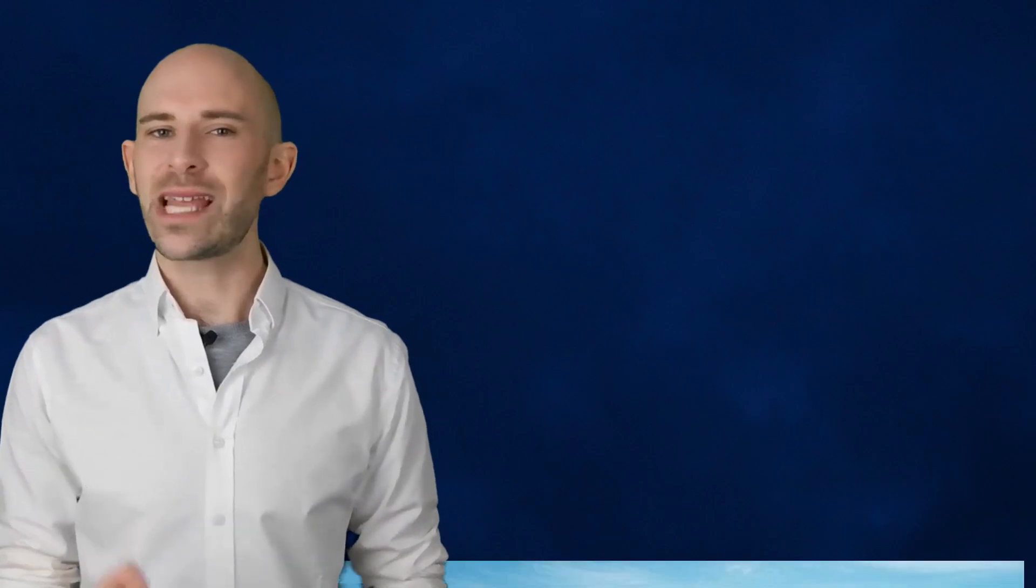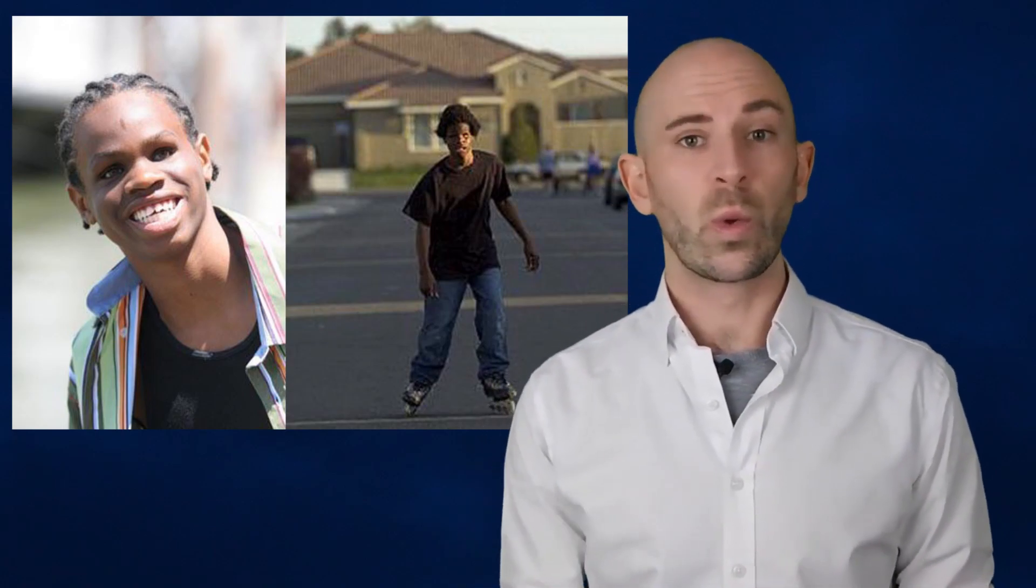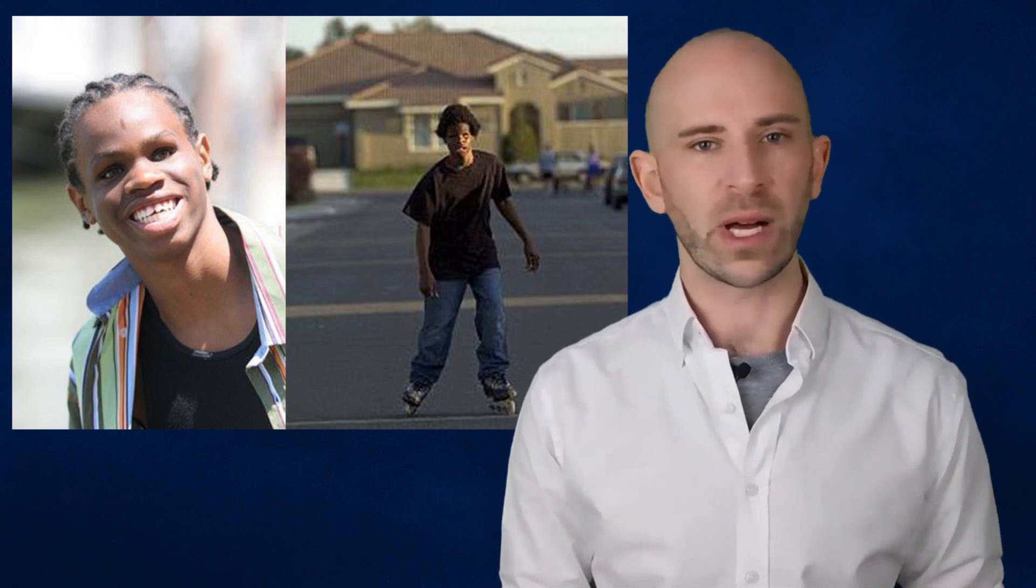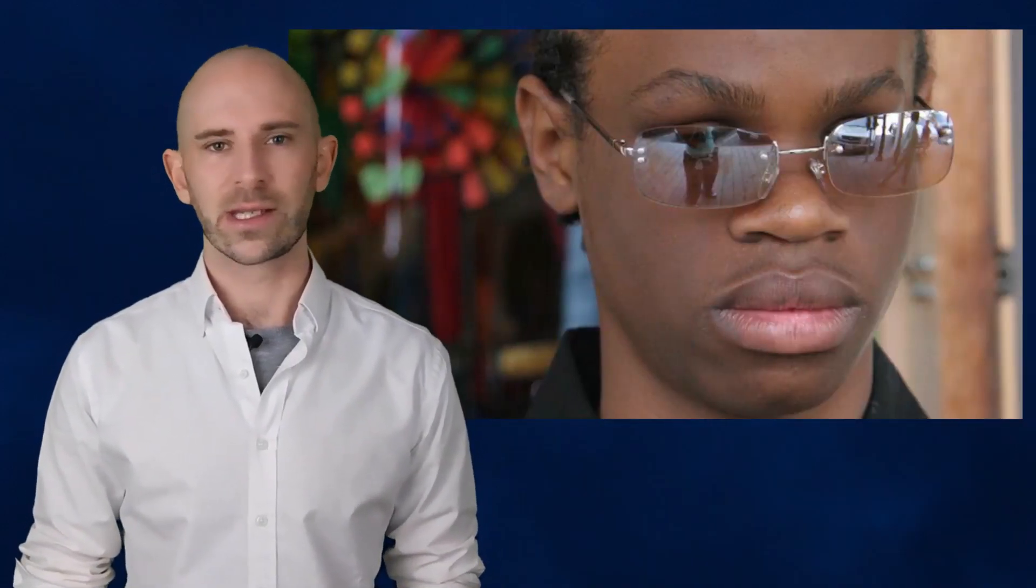Some notable cases include Daniel Kish, who was blind since he was a baby. He can ride a bike, climb mountains, and live in the wilderness alone, all because of his echolocation skills. Or there is Ben Underwood, who had his eyes removed due to cancer when he was three. He learned how to do all the things that normal teenagers do, like play video games, foosball, basketball, football, and he was fearless on rollerblades. Sadly, Ben passed away from the same cancer that claimed his eyes on January 19, 2009, at the age of 16.